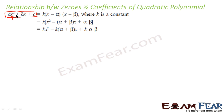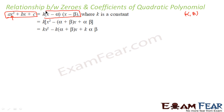Let's assume that alpha and beta are the zeros of this quadratic polynomial. So we can write this function as k(x − α)(x − β).